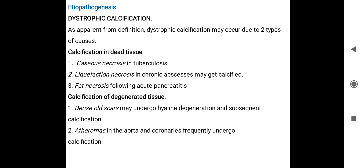Dystrophic calcification may occur in two types of causes: calcification in dead tissues, and calcification in degenerated tissues. Examples include caseous necrosis in tuberculosis. Liquefaction necrosis and chronic abscesses may get calcified. Fat necrosis and acute pancreatitis are also conditions where dystrophic calcification occurs.